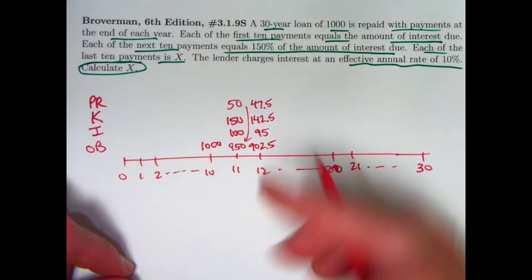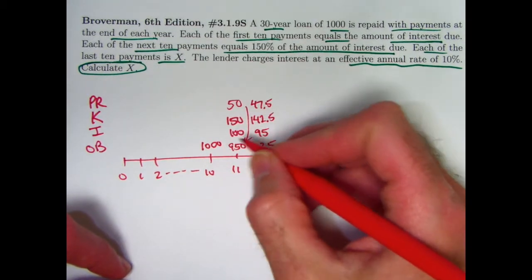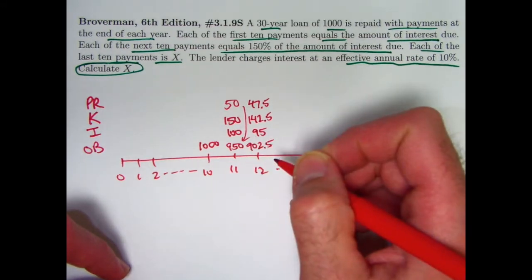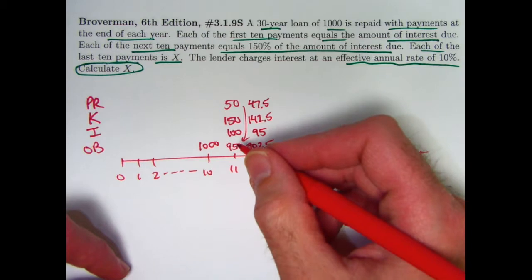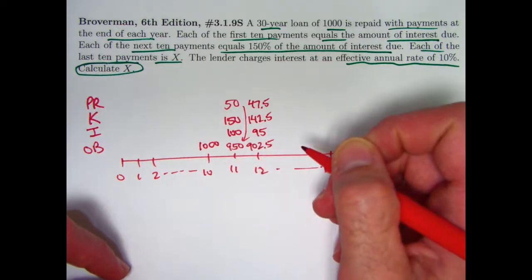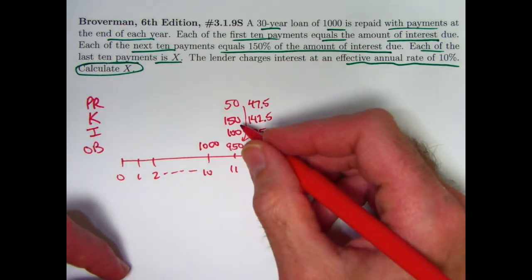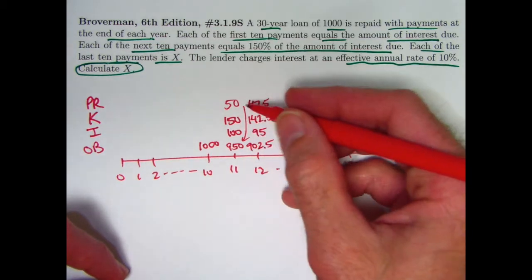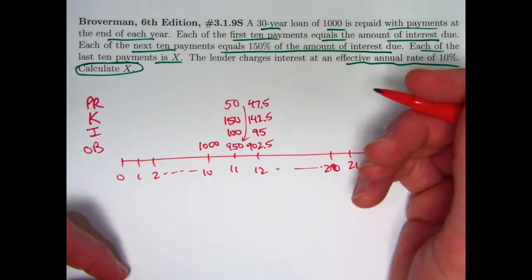Now think logically, okay? So each payment here in this group of payments is 150% of the interest due. The interest is 10% of the previous balance. Therefore, the amount you pay is 15% of the previous balance, and your principal reduction is 5% of the previous balance.